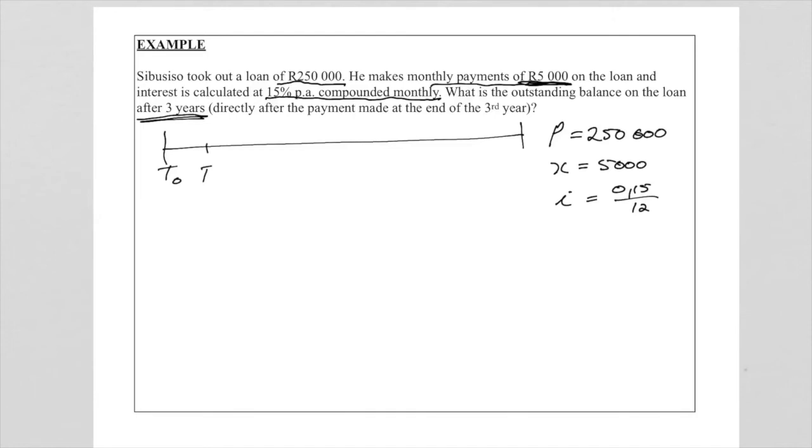If I put this on a timeline for us to see what is happening here. This is T0, T1, T2, let's say that is T3 and let's say somewhere around here is T36. So they want us to find the outstanding balance at this point at T36. So how many payments was made here? Please remember on a loan we always want this little gap. So the first payment was made at T1 and we want the outstanding balance at T36. So I think you agree with me when I say that the number of payments will be 36.